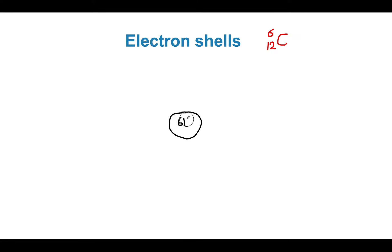How many neutrons do we have? We know the atomic mass is the number of protons plus number of neutrons, and if we have 6 protons, then there should also be 6 neutrons. Since we're talking about a neutral atom of carbon, the atomic number also represents the number of electrons — so there are 6 electrons.